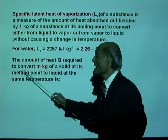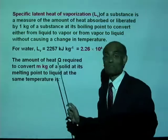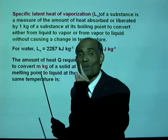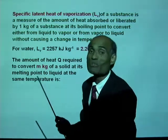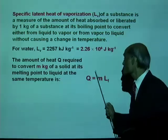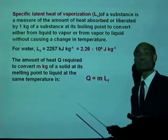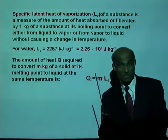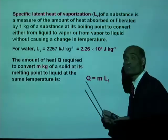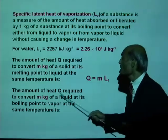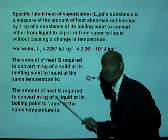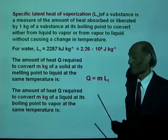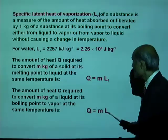Remember that number. The amount of heat Q required to convert m kilograms of a solid at its melting point to liquid at the same temperature — latent heat is the energy needed to convert one kilogram from solid to liquid — so Q equals mass multiplied by latent heat of fusion. Similarly, to convert m kilograms of a liquid at its boiling point to vapor at the same temperature, Q equals mass times latent heat of vaporization.